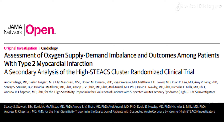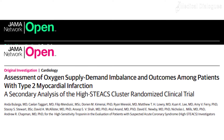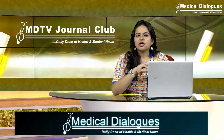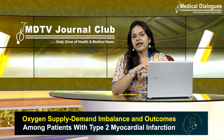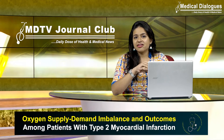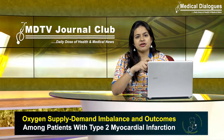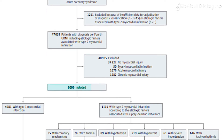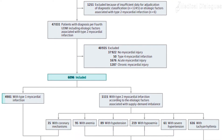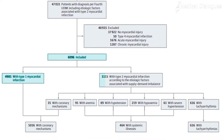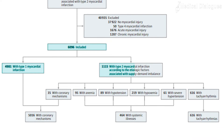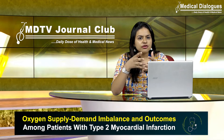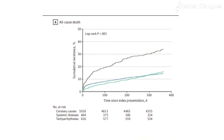To study this, the researchers conducted a secondary analysis of the HIGH-STAX cluster randomized clinical trial, carried out at 10 secondary and tertiary care hospitals, including a total of close to 6,000 patients with a diagnosis of type 1 or type 2 myocardial infarction.